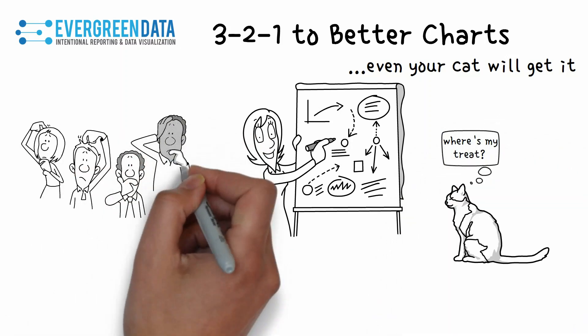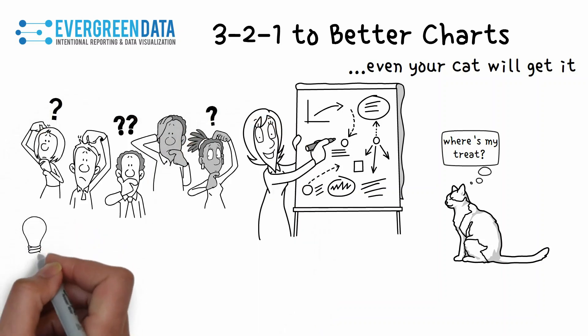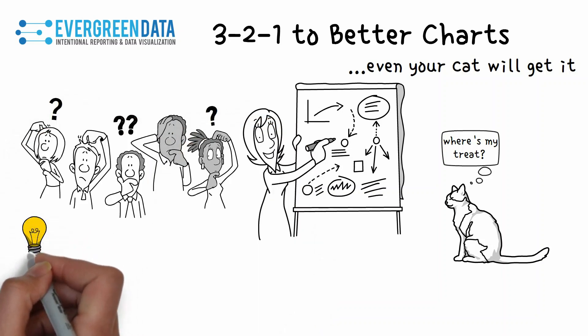So then why is it that we, as smart humans, often forget this rule as we try to explain data and business concepts to other humans?